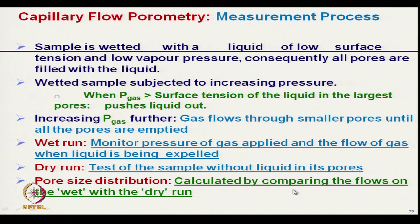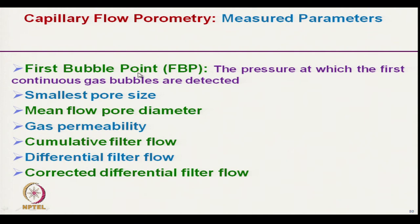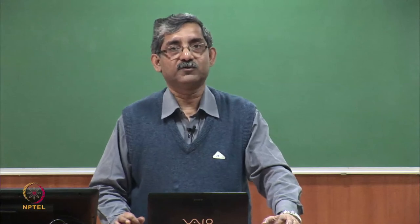The parameters measured include: first bubble point — the pressure at which the first continuous gas bubbles are detected, where higher pore size means lower pressure; mean flow pore diameter; gas permeability obtained from the dry run; cumulative filter flow; differential filter flow; and corrected differential filter flow. These are the parameters obtainable from porometry results.